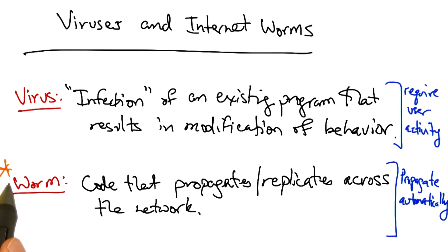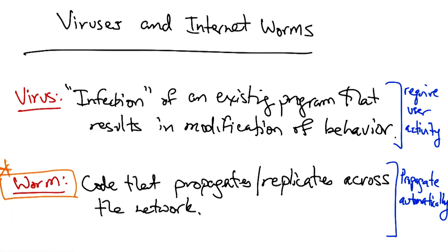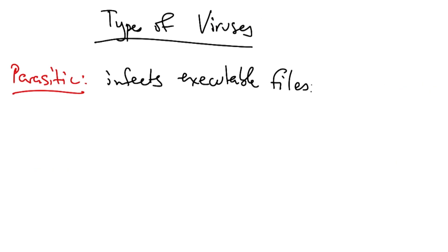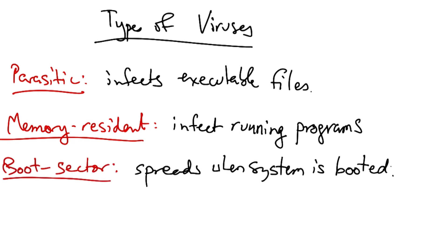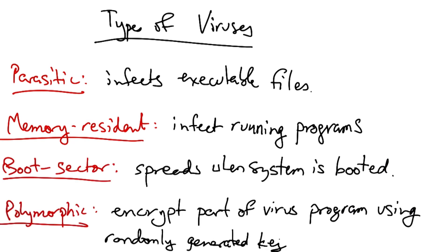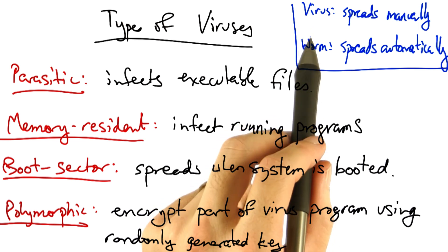We will focus most of our attention on internet worms. But before we dive into the details of internet worms, let's first talk about the different types of viruses. A parasitic virus typically infects an existing executable file. A memory resident virus infects running programs. A boot sector virus spreads whenever the system is booted. A polymorphic virus encrypts part of the virus program using a randomly generated key.